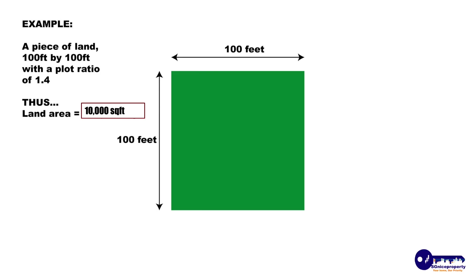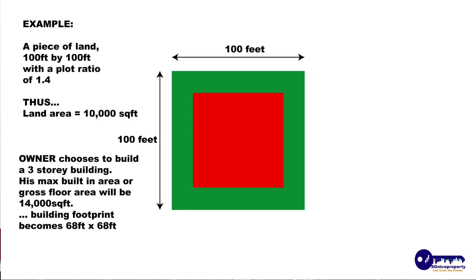By now you could be confused with all the different terms of area, so let me give you an example. Supposing Mr. Tan were to buy a piece of land which is 100 feet by 100 feet with a plot ratio of 1.4. His land area would be 100 feet times 100 feet, which is 10,000 square feet. The owner now chooses to build a 3-storey building, so his maximum built-in area or gross floor area will be 14,000 square feet.